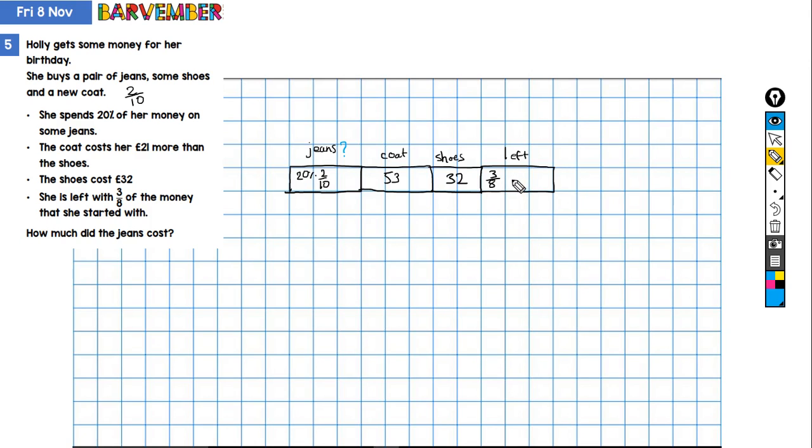So we could do with changing to a common denominator. And I think the easiest one to use is going to be fortieths. So let's change this to fortieths. So five eighths are forty. So three fives are fifteen.